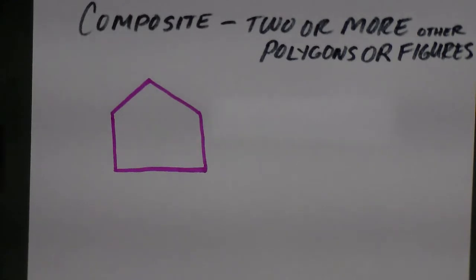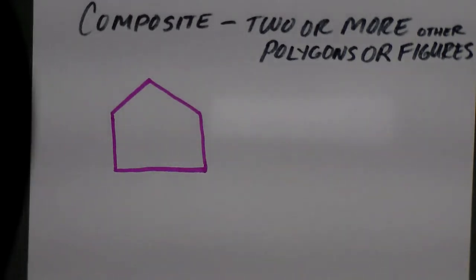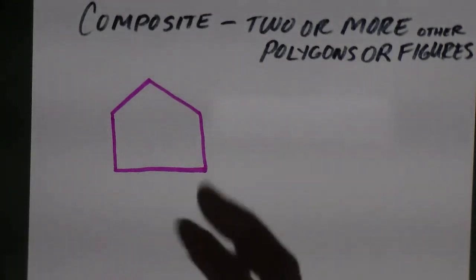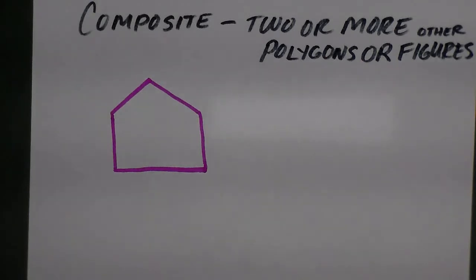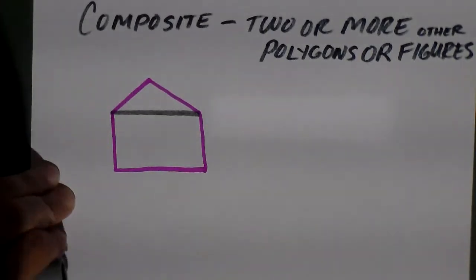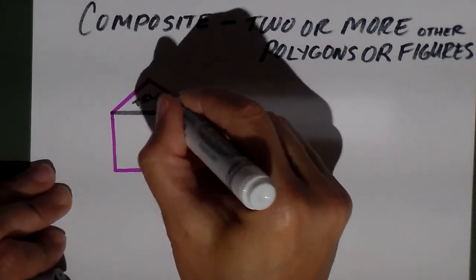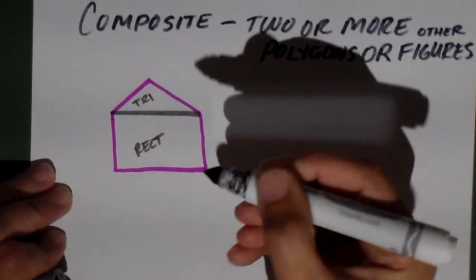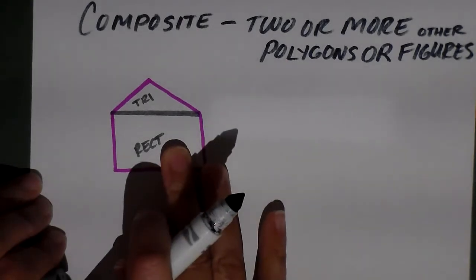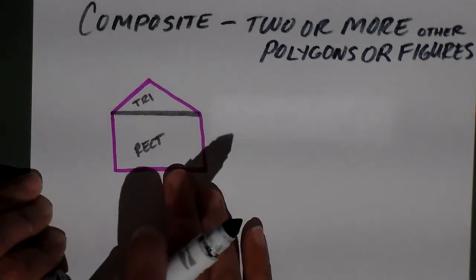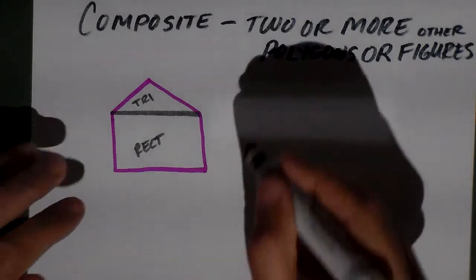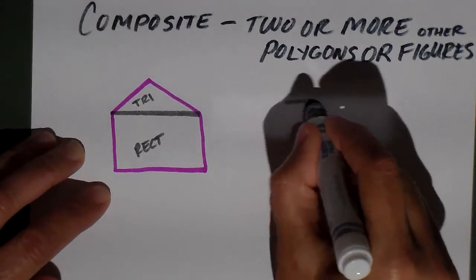What you have to do with composite shapes is create shapes that you know within that shape and see what combination you have. If I add a line right here into this polygon, now I can find the area because I've got a triangle here and a rectangle here. To find the area of this figure, I just find the area of the triangle and the area of the rectangle and combine them.